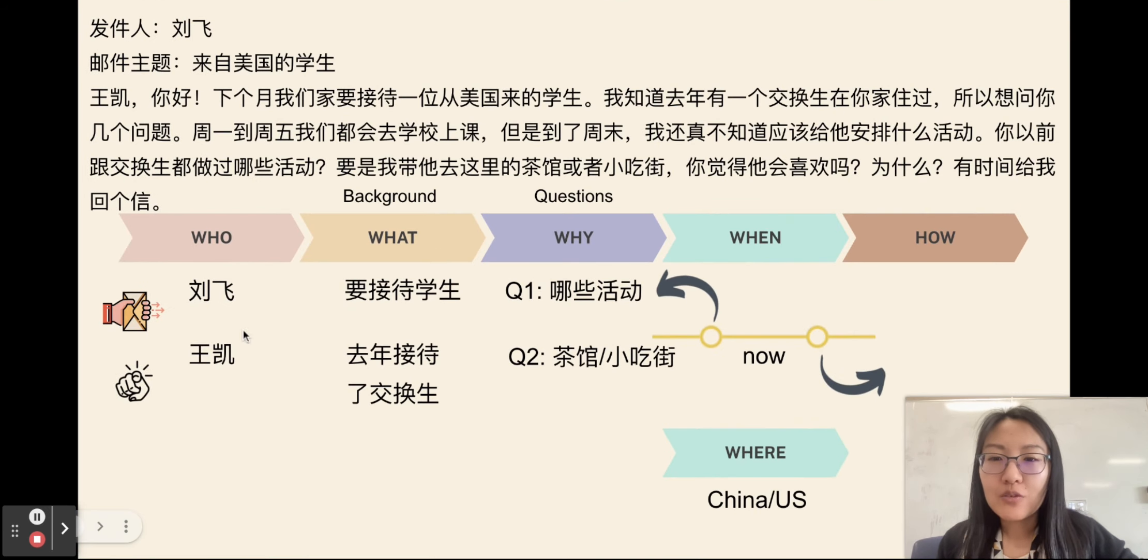So, remember here, 刘飞, 王凯, 一个人呢是要, 刘飞, 他要接待学生. It's in the future. And then, 你呢, 王凯, 去年接待了交换生. Okay, two questions. First one is, 那交换, 你做了什么活动. 第二个就是 question two, 茶馆或小吃街, whether he will like it or not. And then, think about what time and where. And then, here is your turn to answer the question.